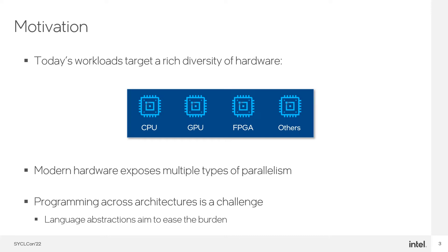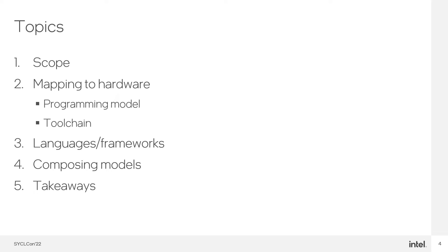Programming across today's architectures can be tough, so we'll talk about some of the language abstractions that make parallel programming easier. The presentation will focus on direct programming — specifically writing code to implement an algorithm or task explicitly. It notably assumes that you care about doing more than just calling performance-tuned libraries, and are writing code that either doesn't exist in a library or writing the library itself. We'll start with a scoping of the types of parallelism of interest, then look at mapping of programs to hardware, cover some common languages and frameworks, and briefly look at composition of programming models and some takeaways.